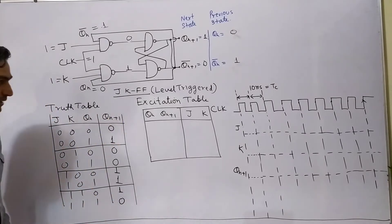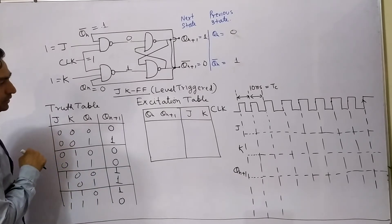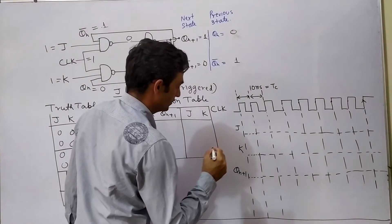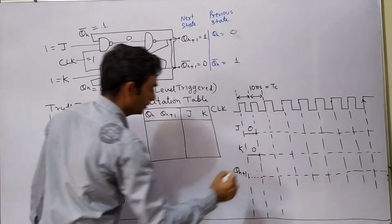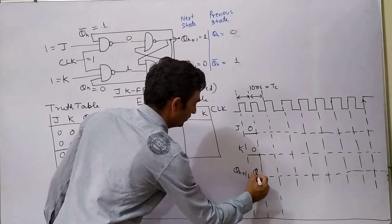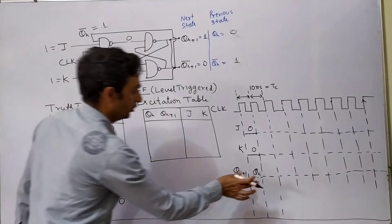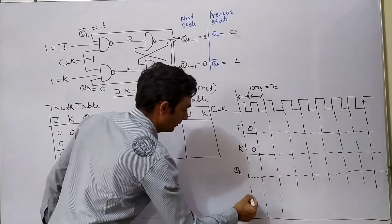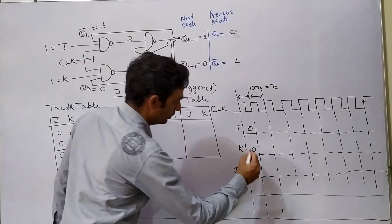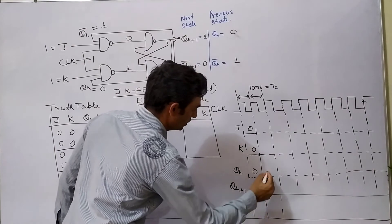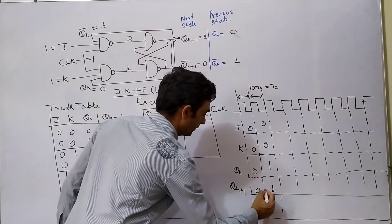Now we can create the timing diagram. When J and K are both 0, 0, QN+1 will be the same as the previous state. So we can write this as QN, and below will be another line indicating QN+1. If QN is 0, then QN+1 will also be 0. If QN is 1, then QN+1 will also be 1.